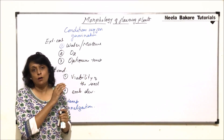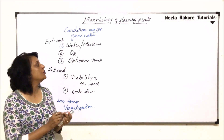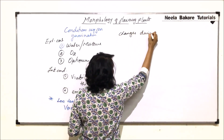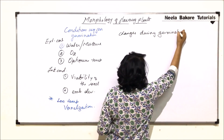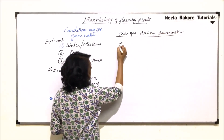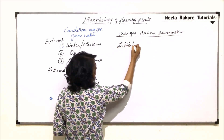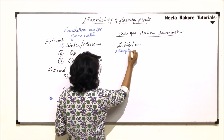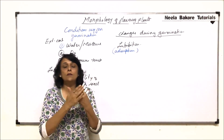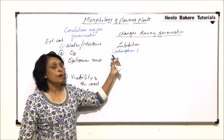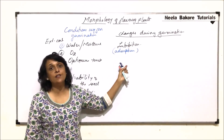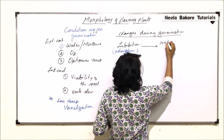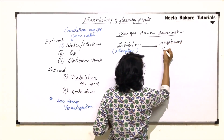If we have to make a list of changes taking place during germination, the first event is imbibition. Imbibition is the adsorption of water — water comes onto the surface of the seed. When water is adsorbed by this process of imbibition, it generates pressure, and because of this pressure the seed coat ruptures.